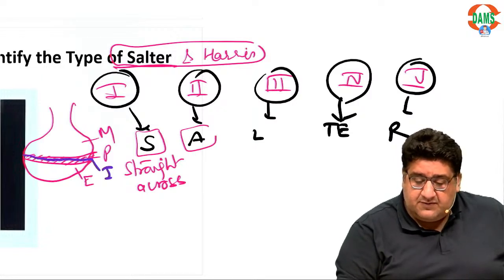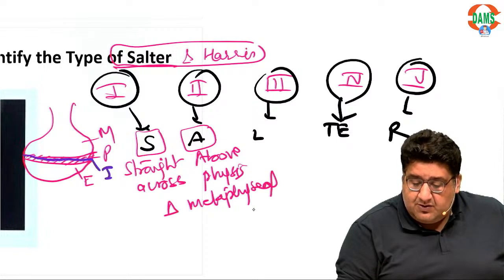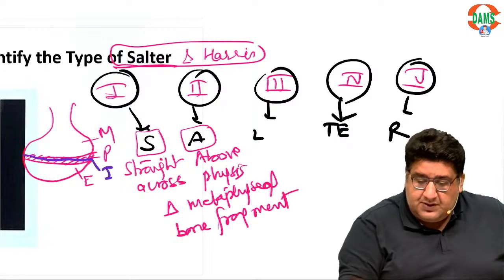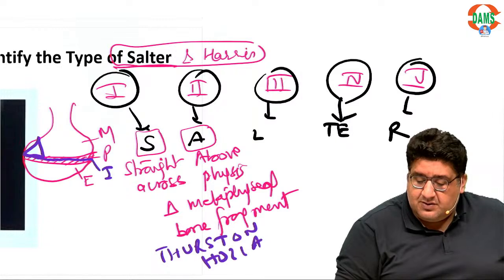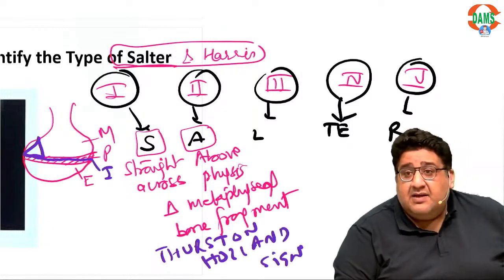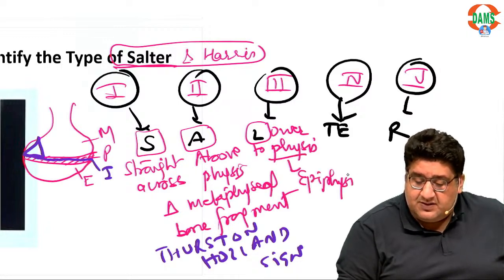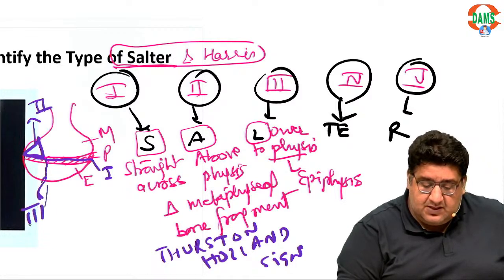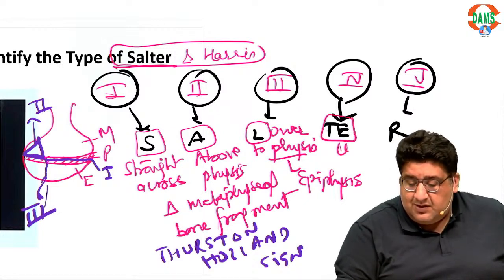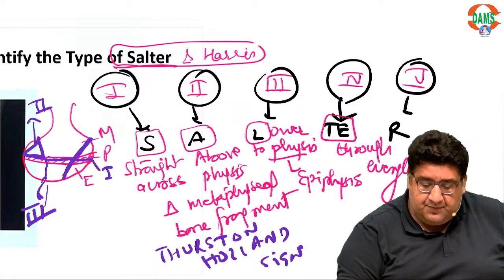L stands for lower — lower to the physis — which is the epiphysis, and that is type 3. T-E means through everything — through epiphysis, physis, and metaphysis — and that is type 4.